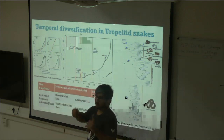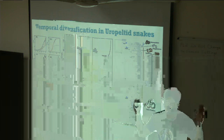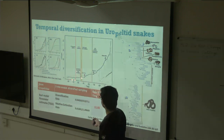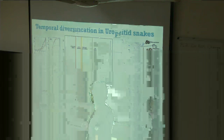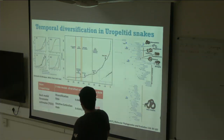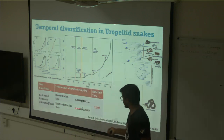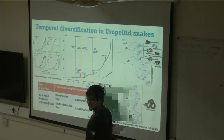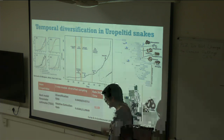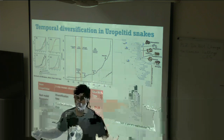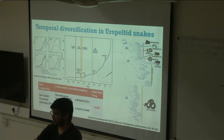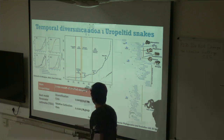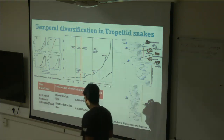Looking at diversification rates across time using multiple models, I find that diversification rates were more or less constant from about 50 million years ago — when shield-tailed snakes originated — to around 11 million years ago. After that, there is a huge decrease in diversification rates and an increase in relative extinction rates. Interestingly, this time period coincides with when forests were starting to contract and grasslands were expanding — suggesting that forest fragmentation was constraining the diversification of shield-tailed snakes.